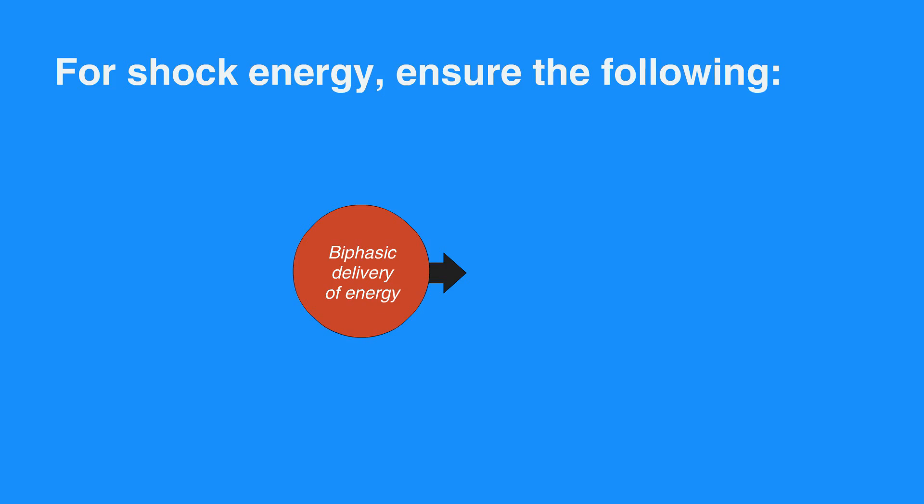Second and subsequent doses should be equivalent, and higher doses should be considered. Monophasic should be 360 joules.